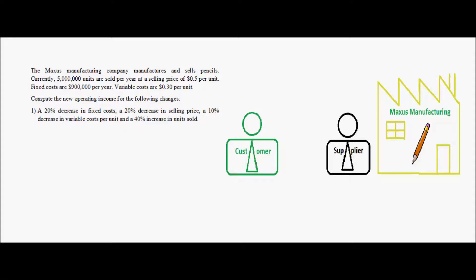Let us look at another example of cost-volume profit analysis. The Maxxis Manufacturing Company manufactures and sells pencils. Currently, 5 million units are sold per year at a selling price of $0.50 per unit. Fixed costs are $900,000 per year and the variable costs are $0.30 per unit. Compute the new operating income for the following changes: a 20% decrease in fixed cost, a 20% decrease in selling price, a 10% decrease in variable cost per unit, and a 40% increase in units sold.